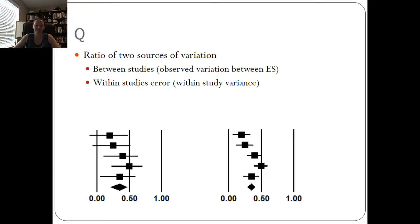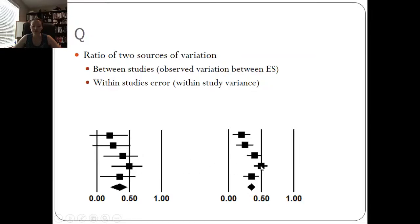A little bit more about Q. Q is basically the ratio of two sources of variation: the between-studies variation to the within-studies variation. Let's look at two example graphs — figure A on the left and figure B on the right. In both graphs, we have the same effect sizes plotted. We have effect sizes at 0.20, 0.25, 0.50, and 0.35 — the same values in both graphs.